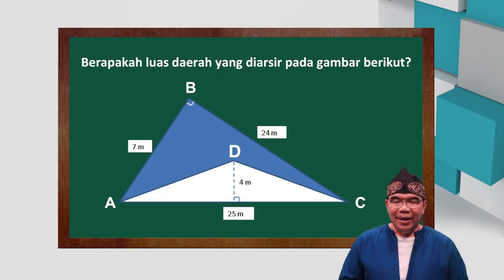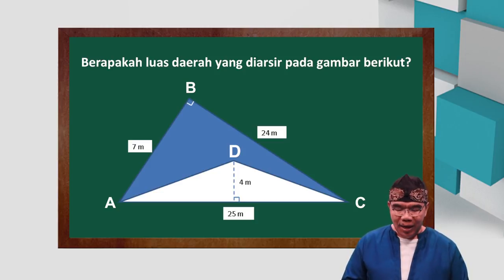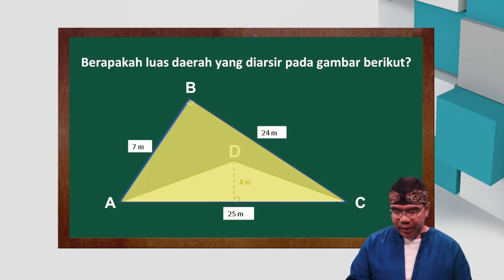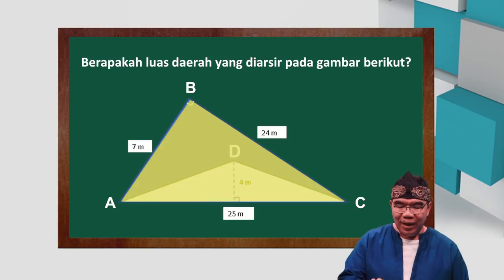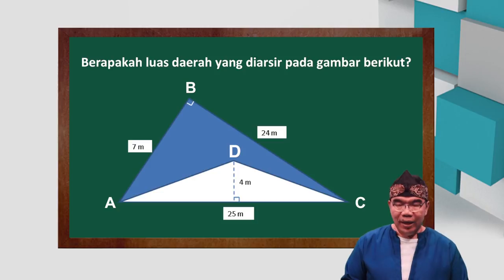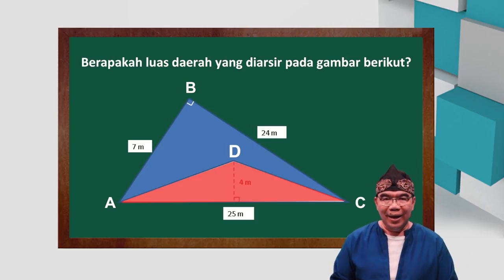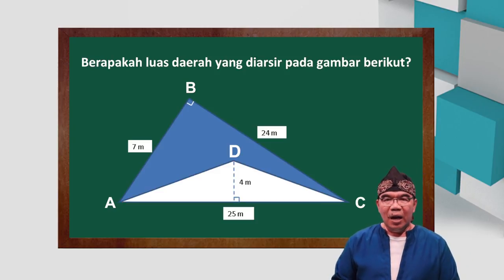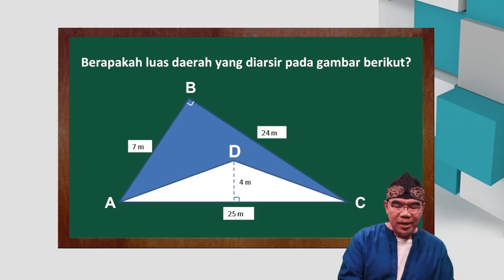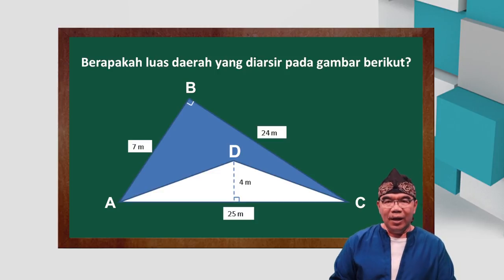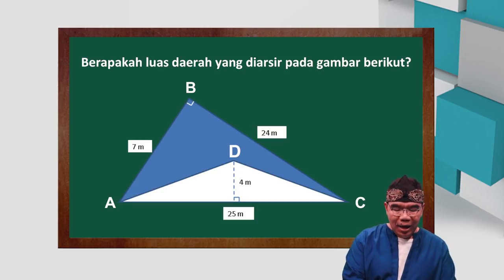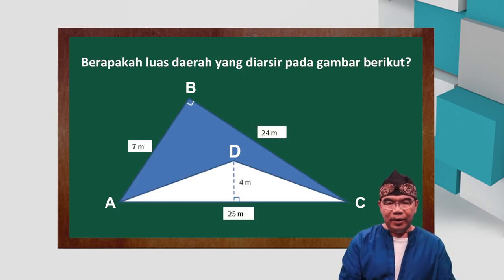Perhatikan. Di gambar ini ada dua buah segitiga. Pertama, segitiga besar, yaitu segitiga A, B, C. Ini segitiga siku-siku, yang siku-sikunya di B. Kemudian ada gambar segitiga yang lebih kecil, segitiga A, D, C. Cara menghitungnya adalah kita hitung dulu luas segitiga A, B, C, kemudian dikurangi luas segitiga A, D, C.